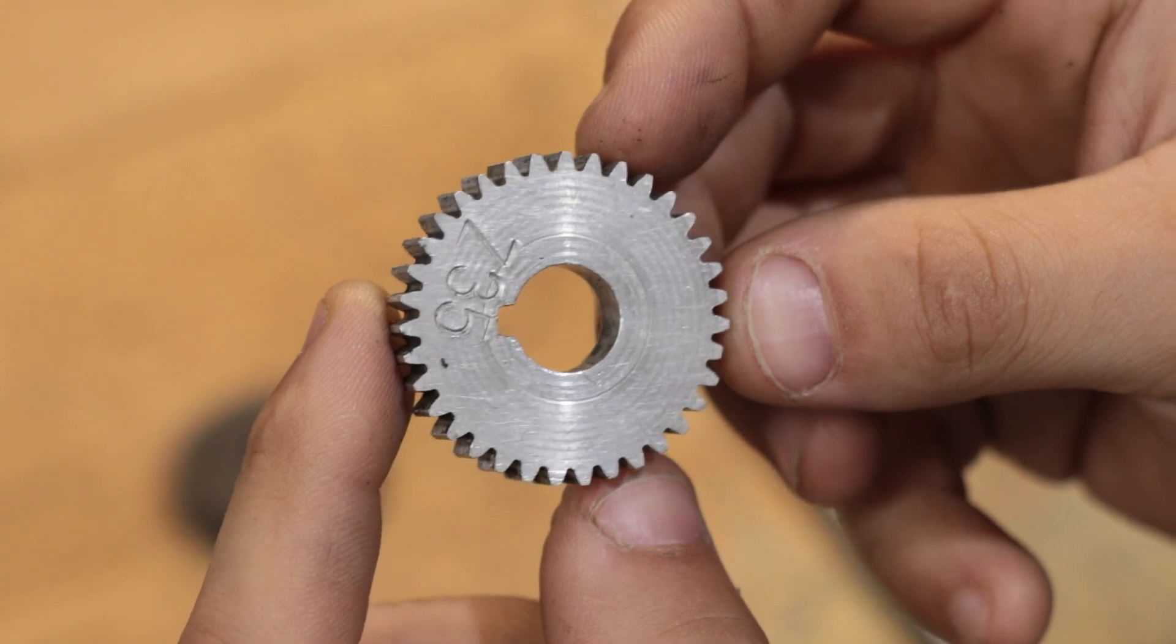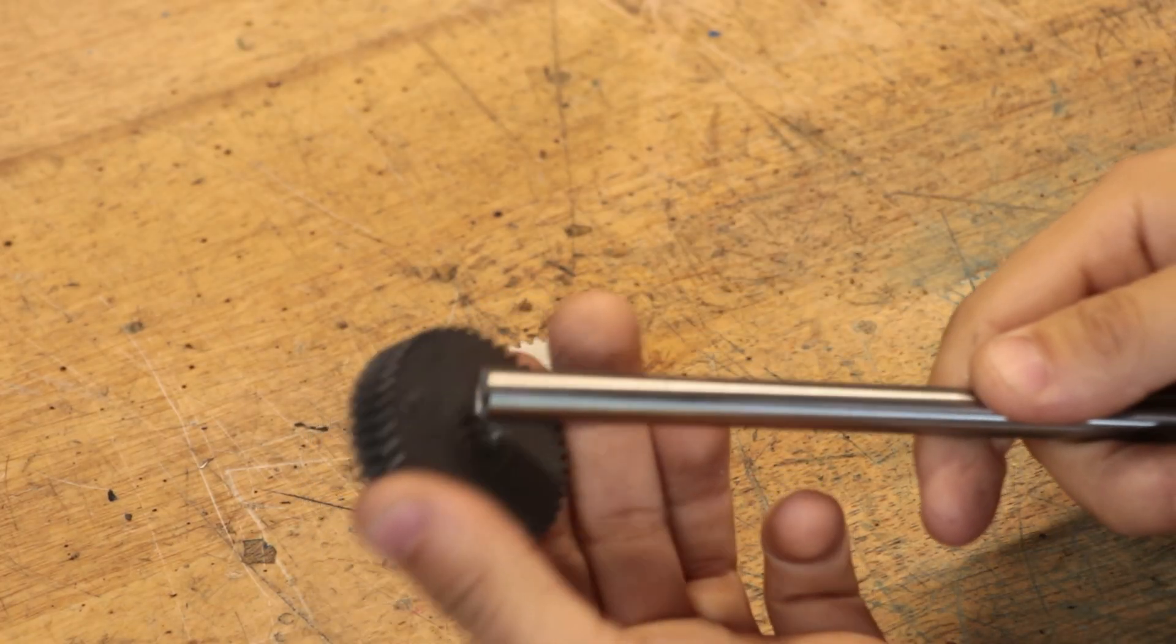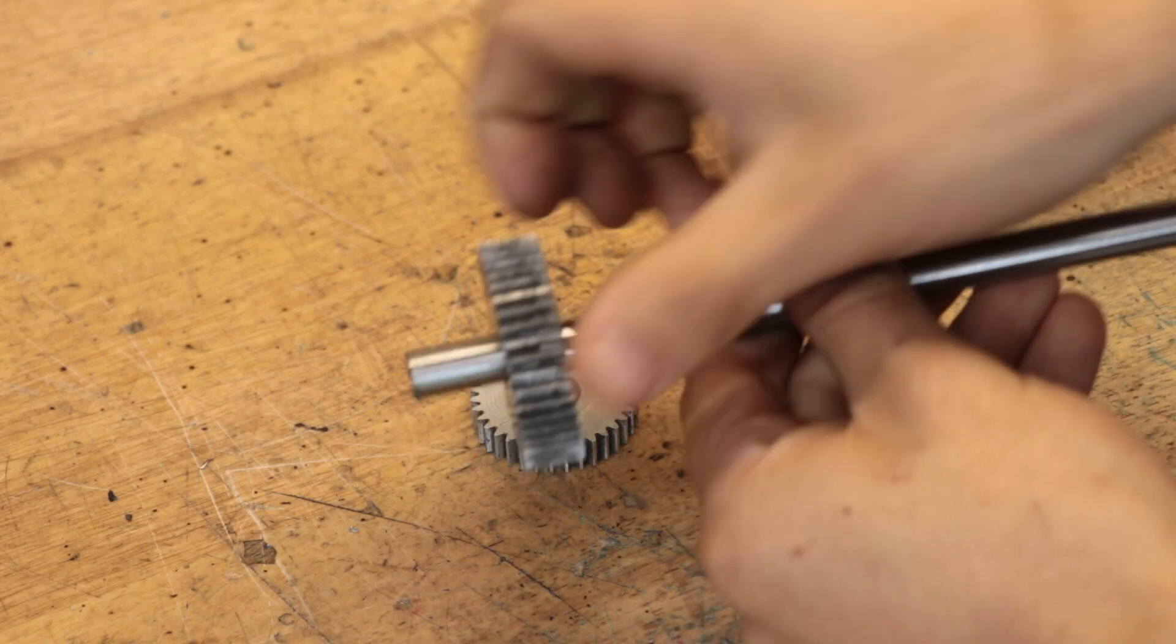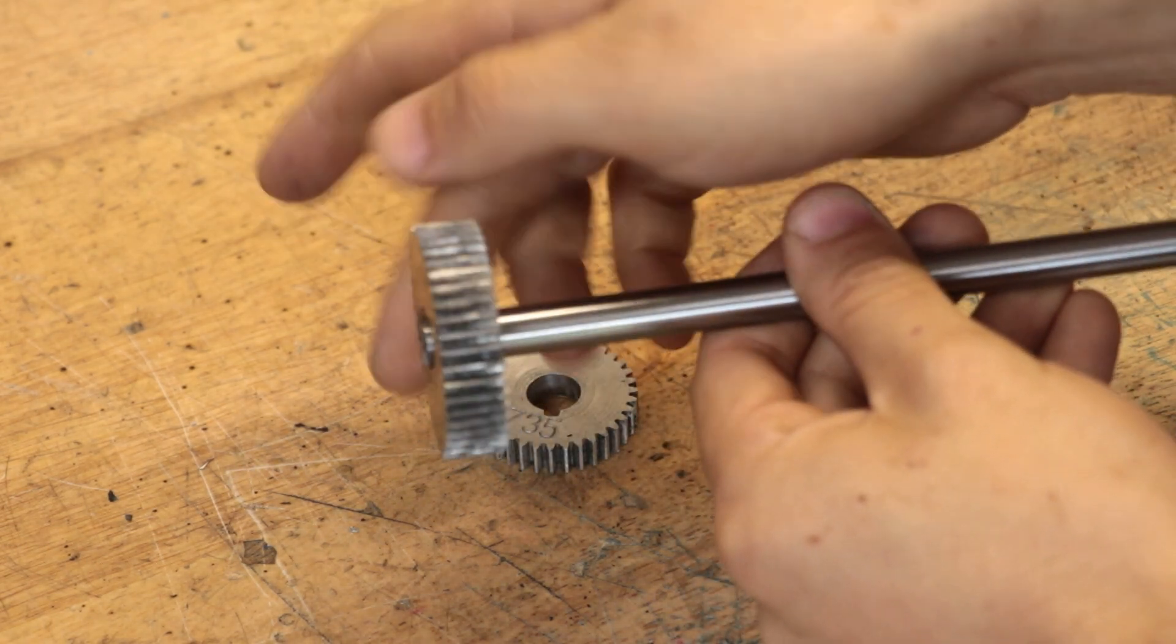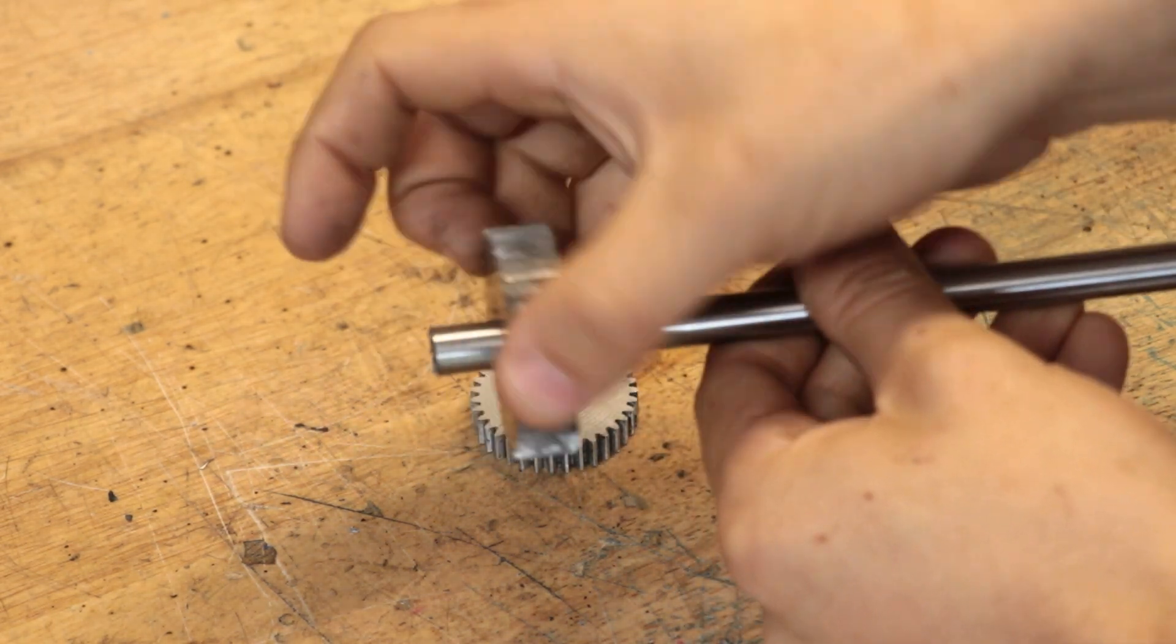That square notch in the bore is for a key. As you can probably imagine, if we put the idler gear on a shaft and spin it or apply torque to it, it's simply going to spin freely on the shaft.